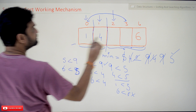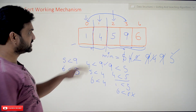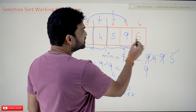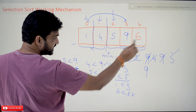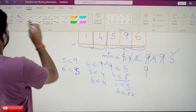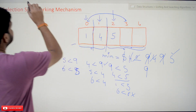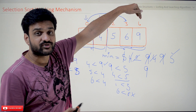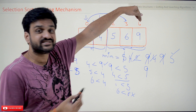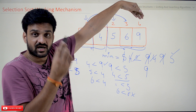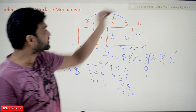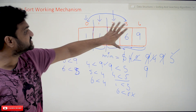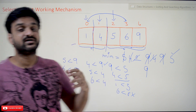So 9 and 5 get swapped — 5 comes here and 9 goes there. In the next iteration, 9 is again considered the minimum element. We compare 6 and 9 — 6 is smaller so they get swapped. After swapping, we get 6 here and 9 at the end. There is no need to consider that last position since the highest element has naturally moved to the end. The comparisons run from 0 to n minus 1, so n minus 1 comparisons bring all elements into sorted order.